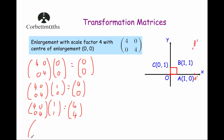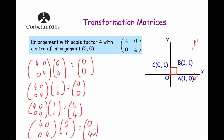Finally, point C — the point 0, 1. Multiplying the matrix 4, 0, 0, 4 by the point 0, 1: 4 times 0 is 0, 0 times 1 is 0, adding them together is 0. Then 0 times 0 is 0, 4 times 1 is 4, adding them together is 4. So point C moves to the point 0, 4 — up here. As you can see, this is an enlargement of scale factor 4 with the centre of enlargement at the origin. I'll see you in the next video. Thank you.